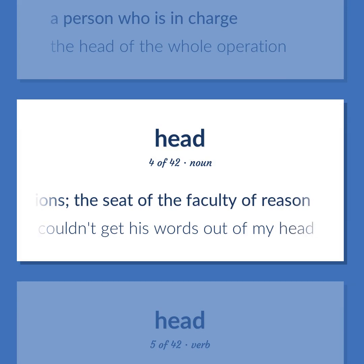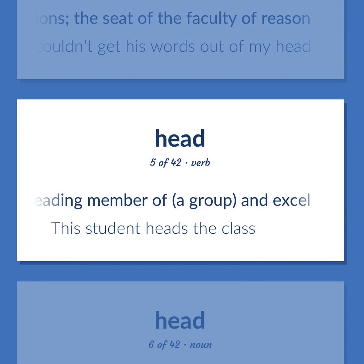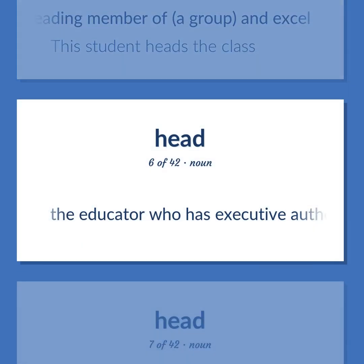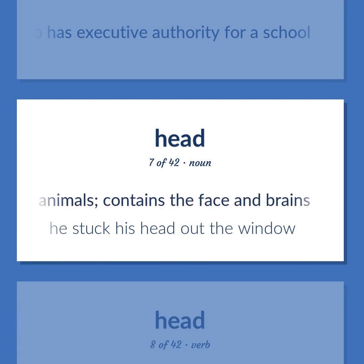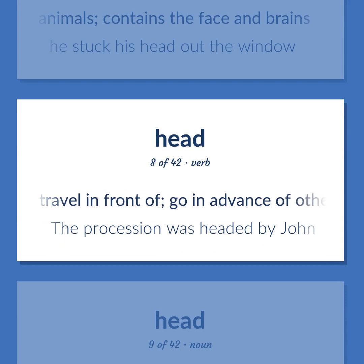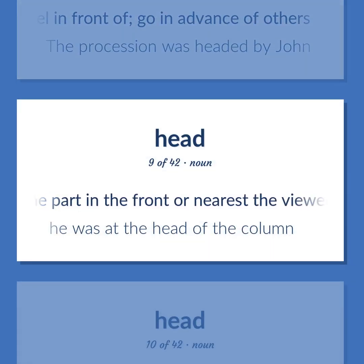Be the first or leading member of a group, and excel. This student heads the class. The educator who has executive authority for a school. The upper part of the human body, or the front part of the body in animals, contains the face and brains. He stuck his head out the window. Travel in front of; go in advance of others. The procession was headed by John. The part in the front or nearest the viewer. He was at the head of the column.